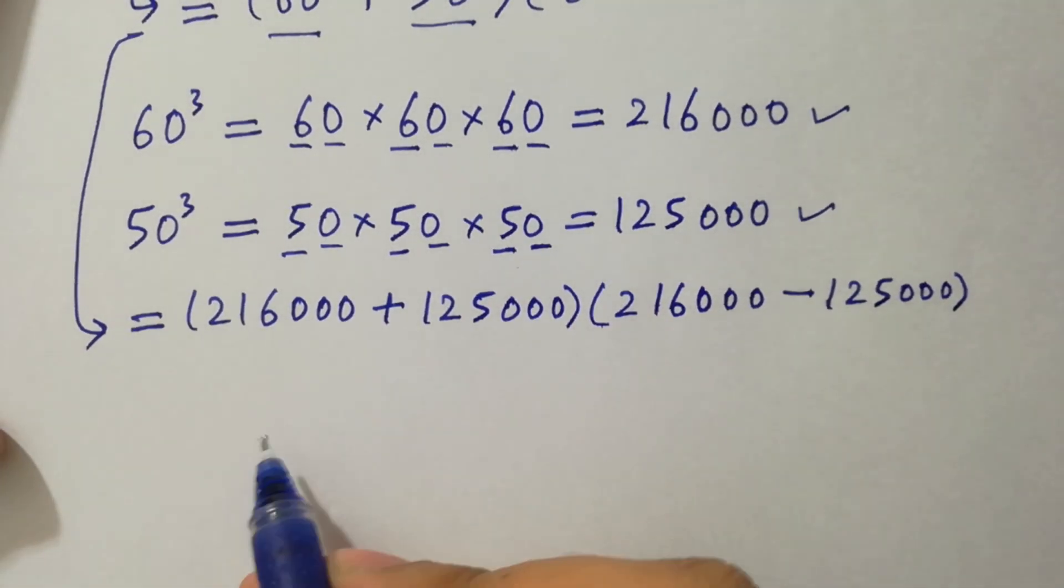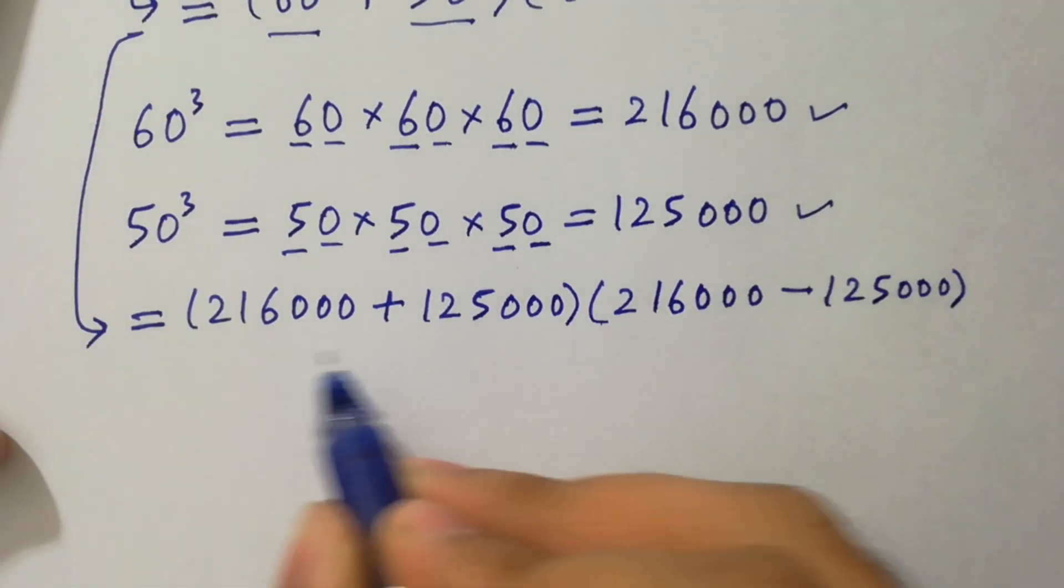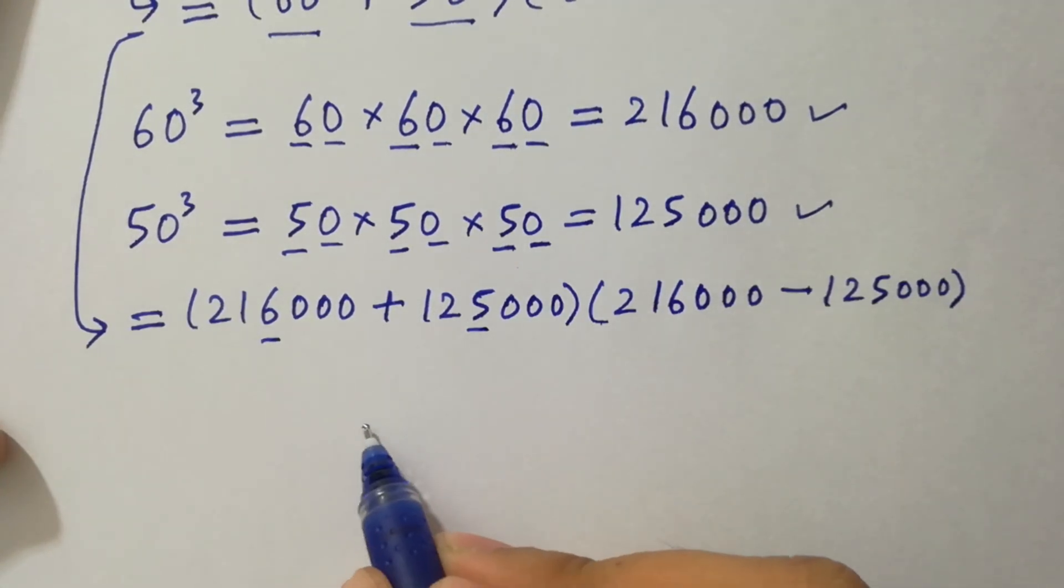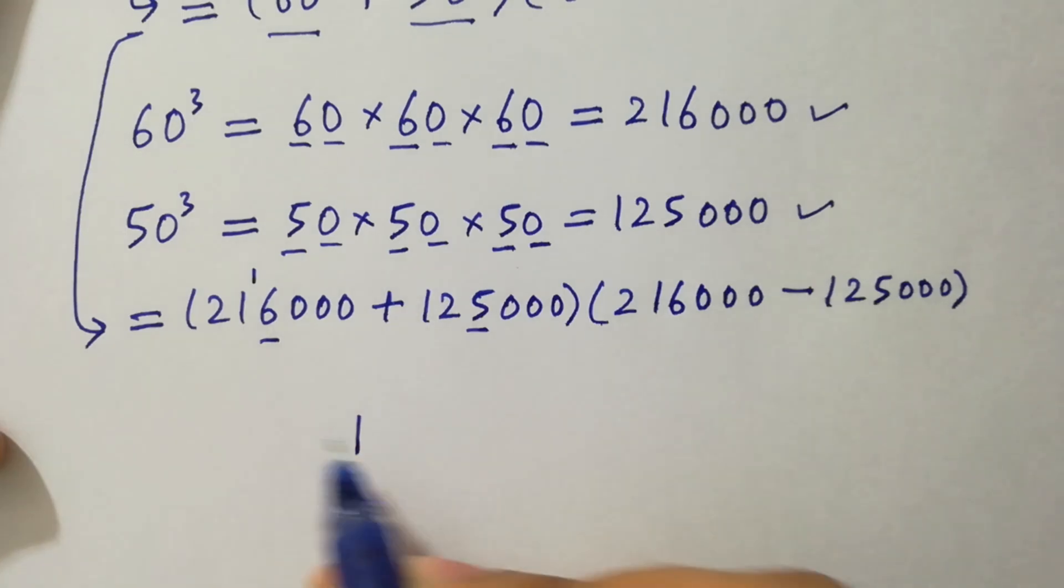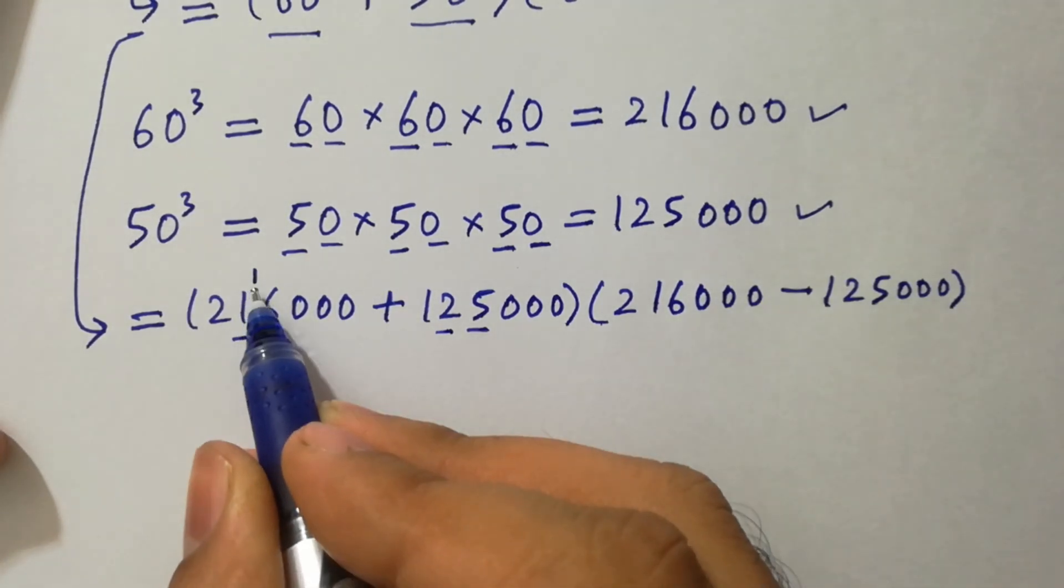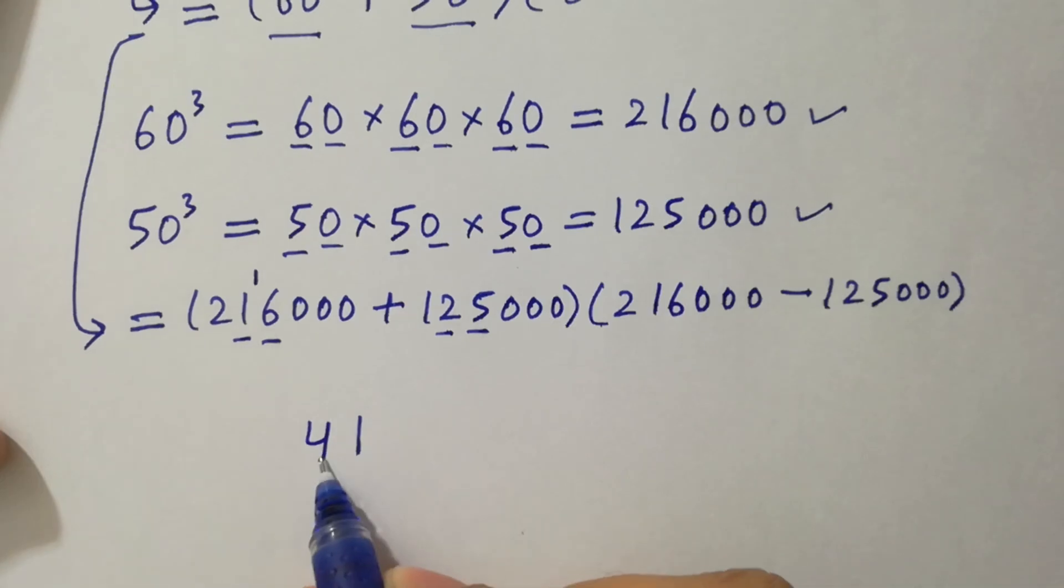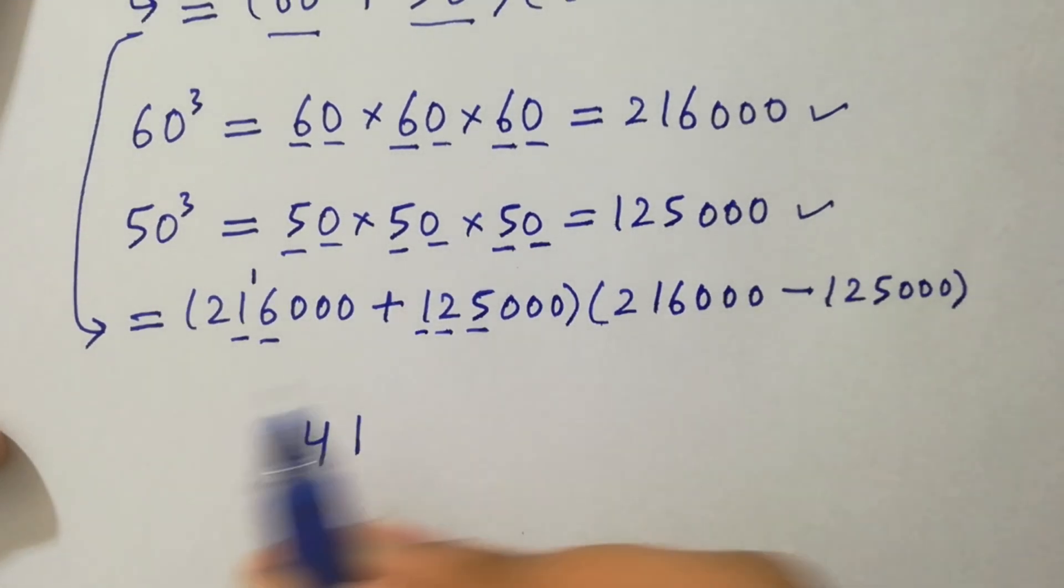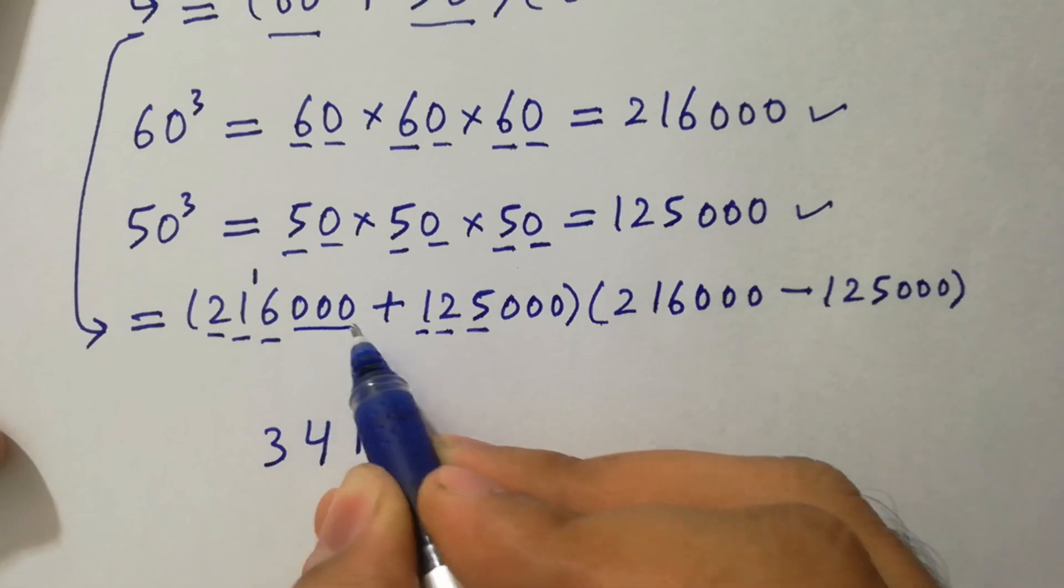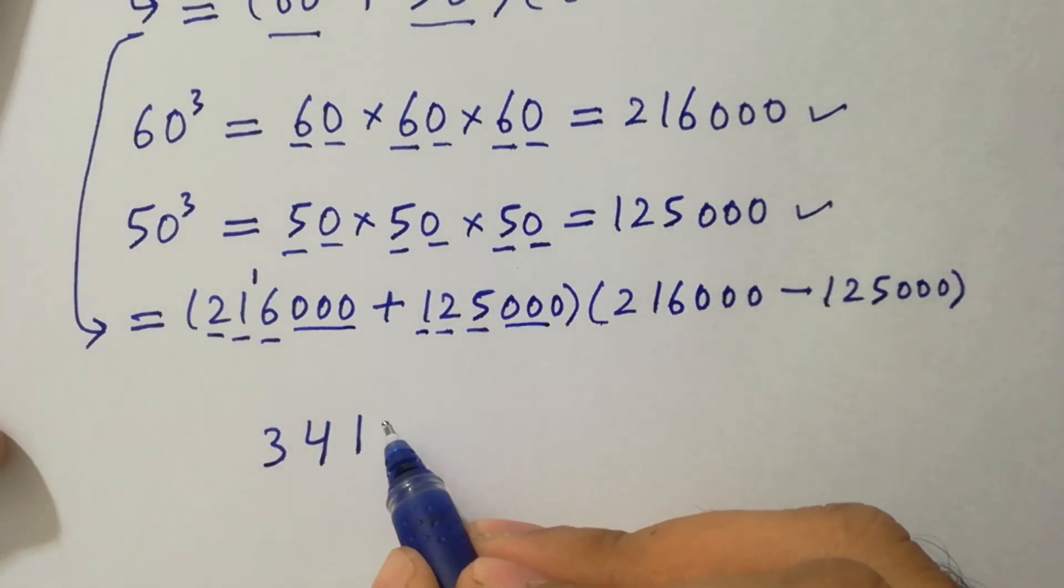Add them, we have here 5 plus 6 is 11, 1 here 1 carry. Next 2 plus 1 is 3, 3 plus 1 is 4. Next 1 plus 2 is 3, 3 plus 1 is 4. Next 1 plus 2 is 5. Adding them we have here 3 times 0.